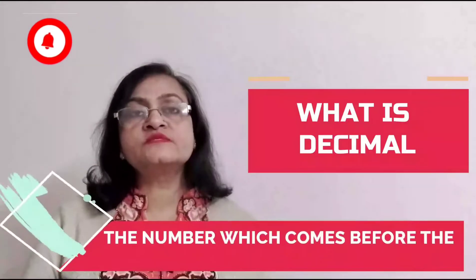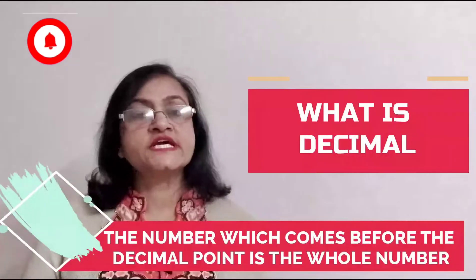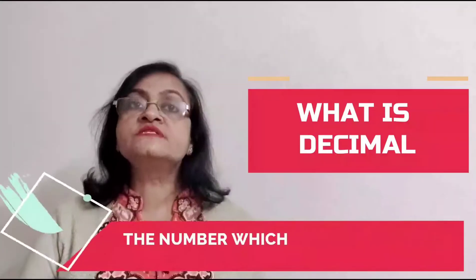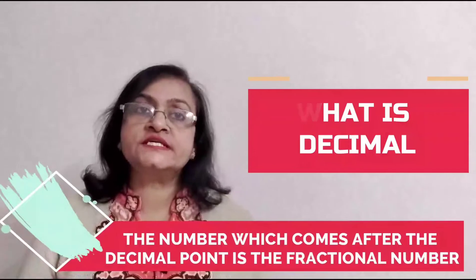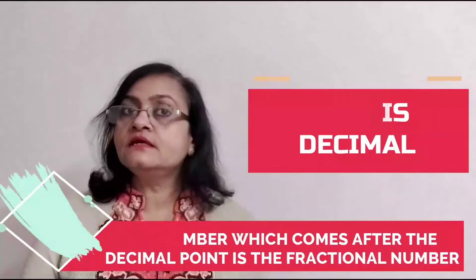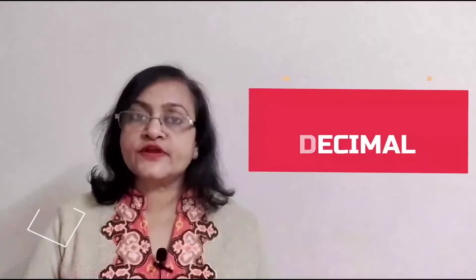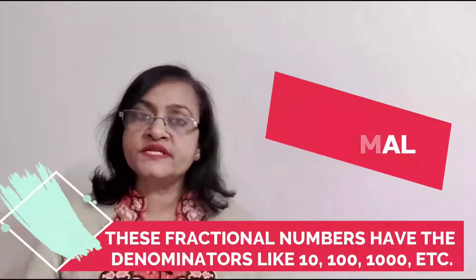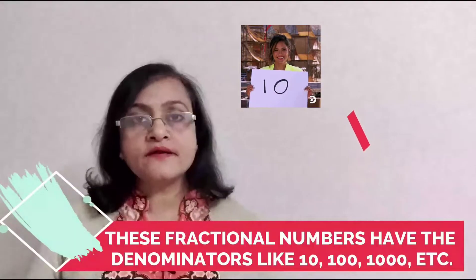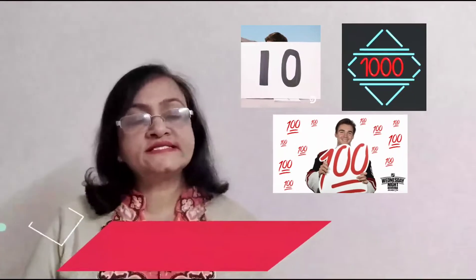The number which comes before the decimal point is the whole number, and the number which comes after the decimal point is the fractional number. These fractional numbers have denominators like ten, hundred, thousand, etc.